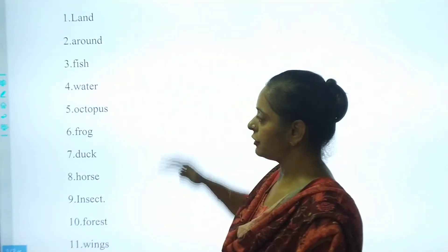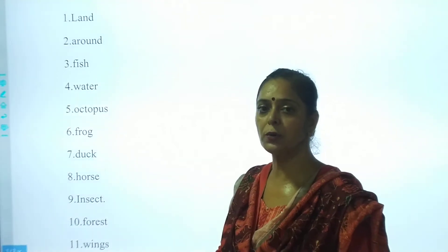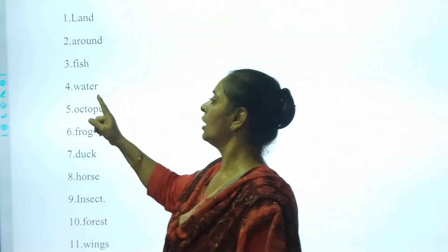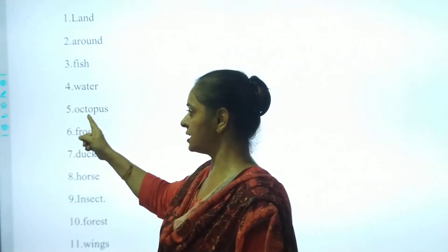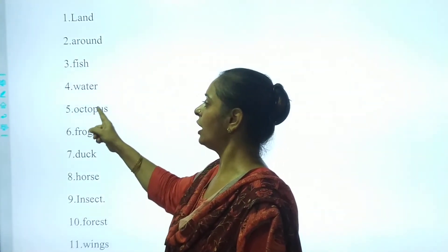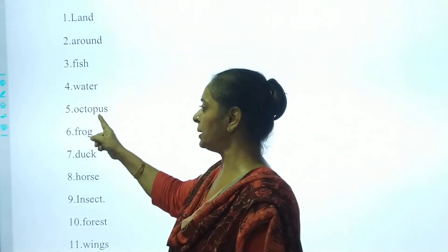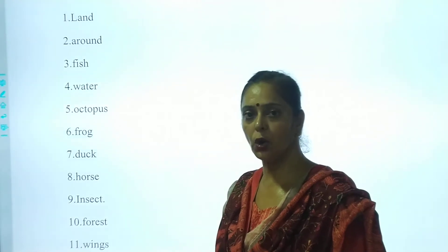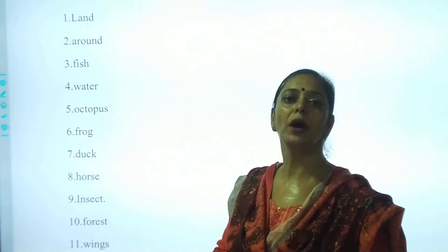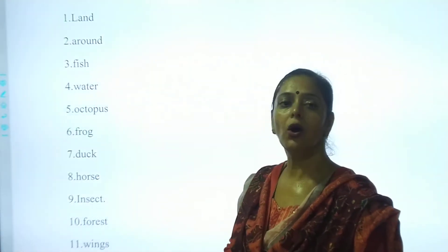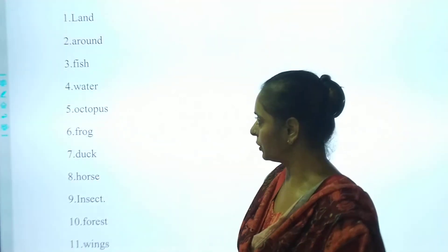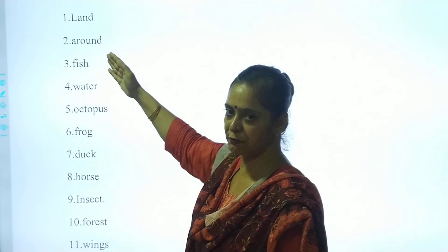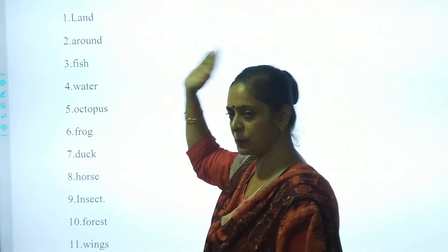And the fifth one is Octopus. What's the spelling? Let's read out. O, C, T, O, P, U, S. O, C, T, O, P, U, S. It's called Octopus. So: Land, Around, Fish, Water, Octopus.